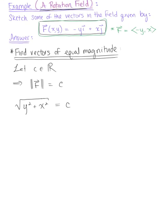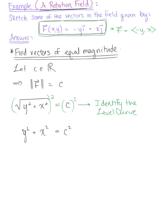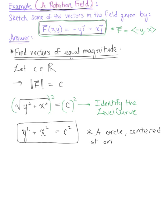Now we can go ahead and find the level curve. We square both sides of our equation, which leaves us with y squared plus x squared equals C squared. We recognize this as a circle — specifically, a circle centered at the origin of radius |C|.